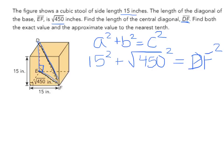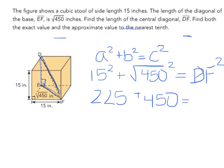So I have 15 squared, which equals 225, and the square root of 450 squared will give you 450, and this will equal DF². So now I can combine these.